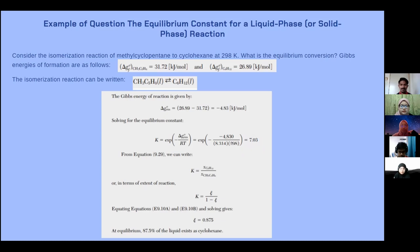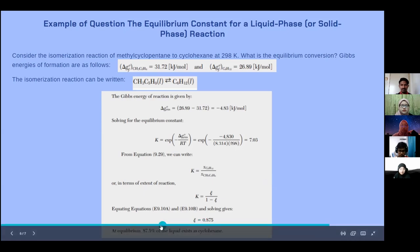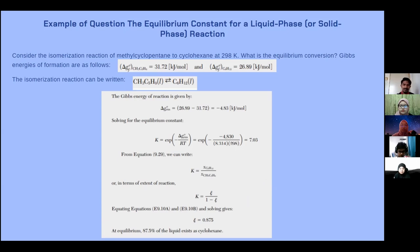Then, by using equation 9.29, which is K equals to X cyclohexane over X methylcyclopentane, or in terms of extent of reaction, K equals to extent of reaction over 1 minus extent of reaction. We will get extent of reaction is about 0.875. And at equilibrium, at least about 87.5% of the liquid exists as cyclohexane. That's all for me. I will pass to Elisa.